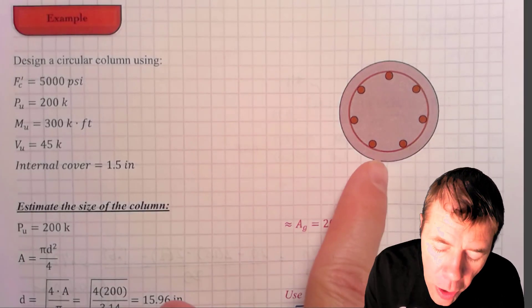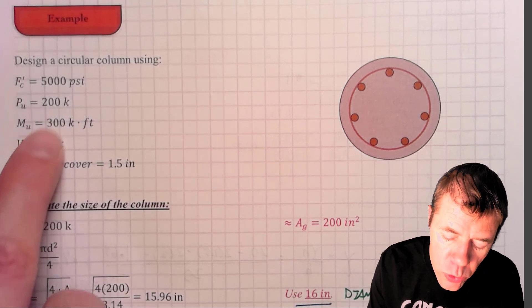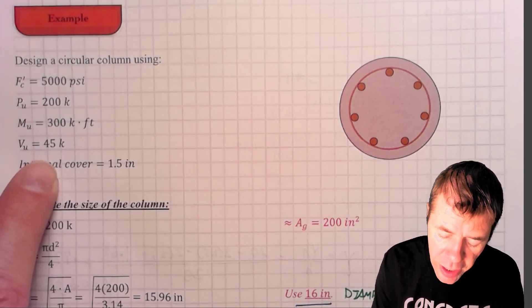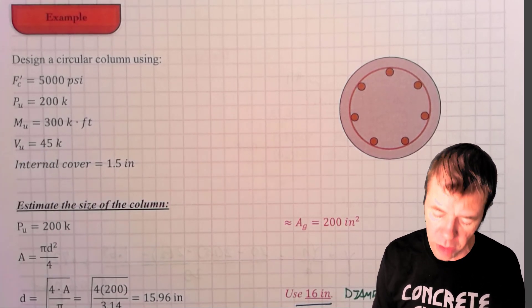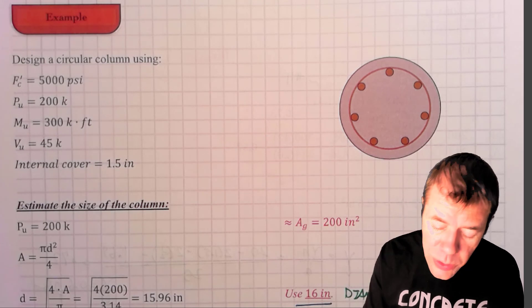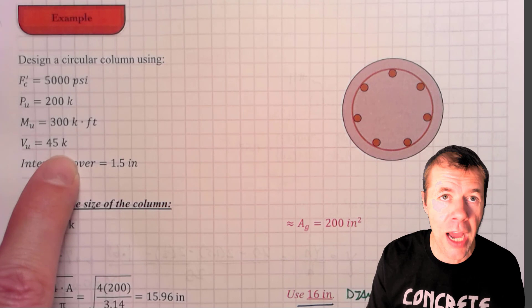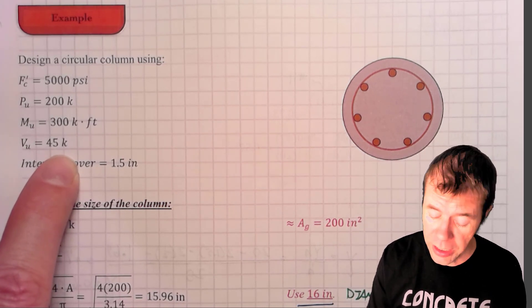We are designing a circular column that has 5,000 psi, axial load of 200 kips, moment of 300 kip feet, a maximum shear of 45 kips, and the internal cover is one and a half inches. The very first thing we're going to do is get this information from our structural analysis. That could be a program, that could be hand calcs, whatever you do, however you want to get your information, then you need to get it.